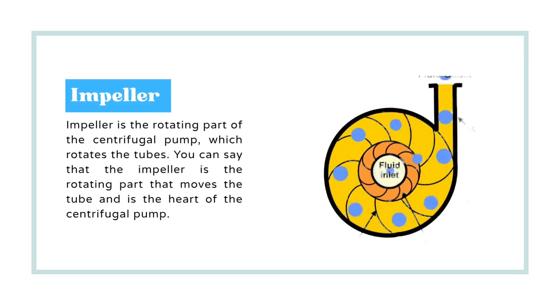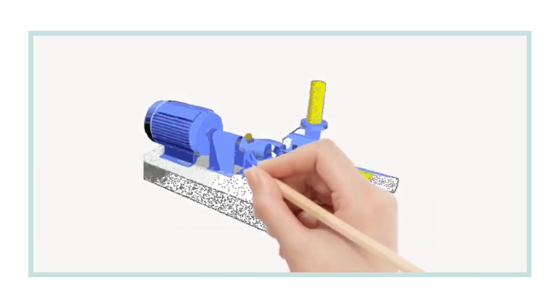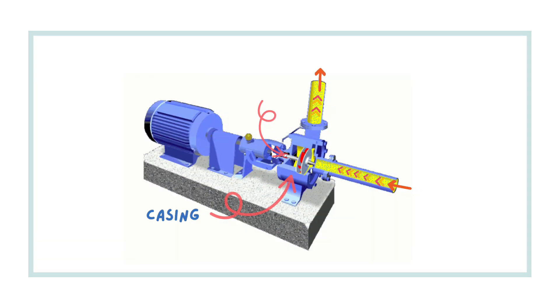The impeller moves the fluid and it is the heart of the centrifugal pump. Then there is the casing, a shell that guides fluid out of the pump. Then there is the suction pipe where fluid enters into the nozzle of the centrifugal pump.